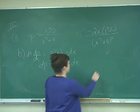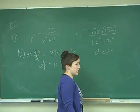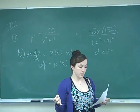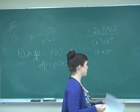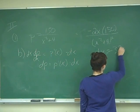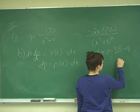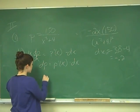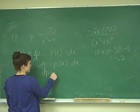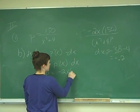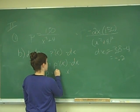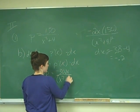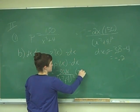Our DX here is the change from our initial value of 4 to our new value of 3.8. So it's 3.8 minus 4, which gives me negative 0.2. Now I can just plug and chug. I have DP equals negative 2X times 150, or negative 300X over X squared plus 4, quantity squared, times negative 0.2.